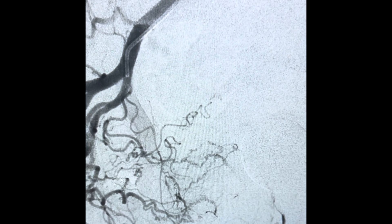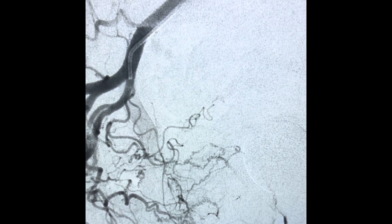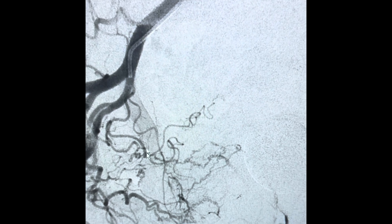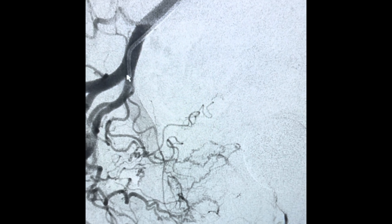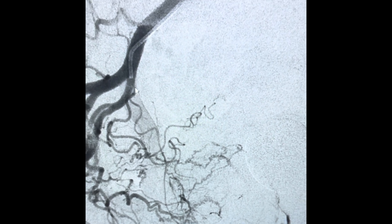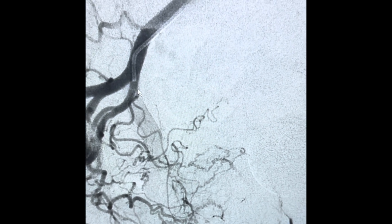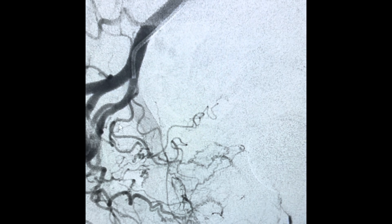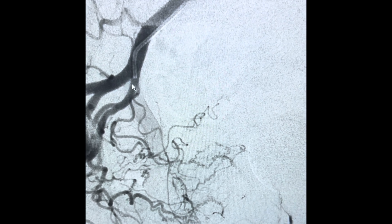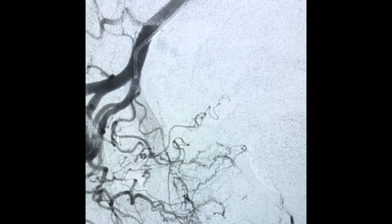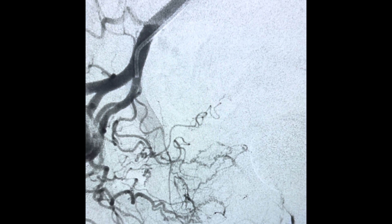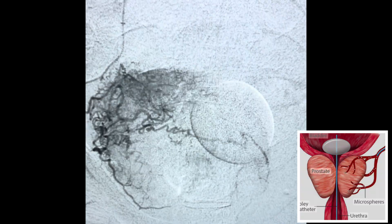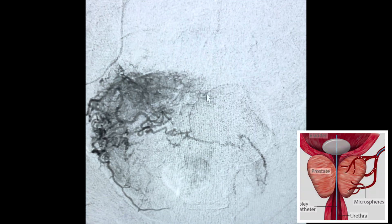This is a really large prostate, which means the prostatic artery is quite large in this patient. This is a common ostium of the superior vesicle and the inferior vesicle artery, and the prostatic artery comes from the inferior vesicle artery and supplies this really large prostate. There's an AP projection of the same thing.